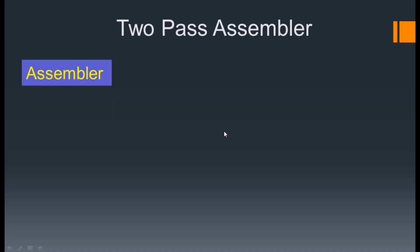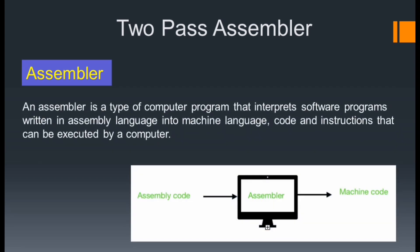The first thing we are going to discuss is what exactly an assembler is. An assembler is a type of computer program that interprets a software program written in assembly language into machine language code and instructions that can be executed by the computer. Here in the diagram you can see that we have assembly code, and with the help of the assembler we can easily convert this assembly code into machine code.